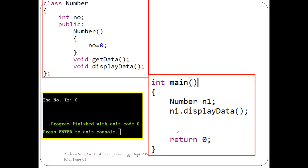Now let us see this example. There is a member variable and the explicit constructor declaration and definition inside the class itself. This is the constructor name, and 'no' is a member variable which has been initialized to zero. Whenever the object of this class is created, the constructor gets called automatically, and the output — because of the call n1.displayData — is zero.